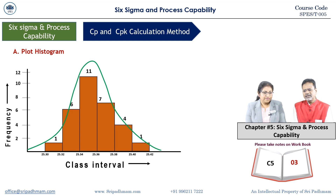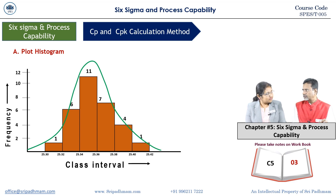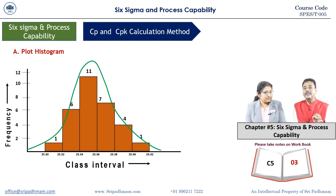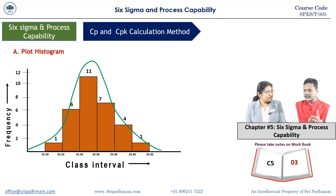This is a bell-shaped curve. You can call it a bell curve, otherwise call it a frequency distribution curve — FD curve. It is also called a Gaussian curve, named after the scientist Gauss. So it has three names: bell curve, frequency distribution curve, and Gaussian curve.